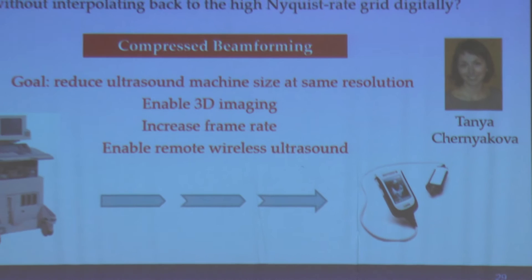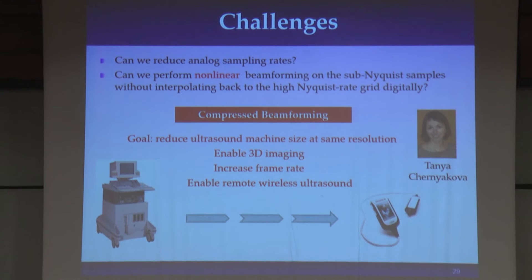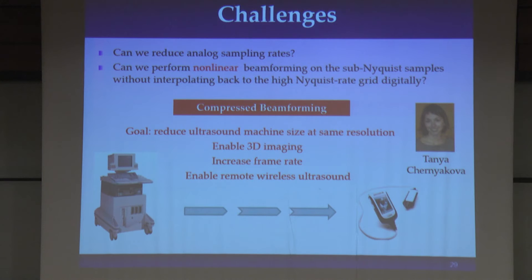Not only could we sample at a low rate, but could we sample at a low rate so that we could do different types of nonlinear processing on these low-rate samples? That's of course much more difficult. What we're going to show later today — and Tanya's going to talk a lot about this — is that we could do this by a process we call compressed beamforming. Not only could we reduce sampling, we could actually perform beamforming on these compressed samples. This paves the way towards high-resolution 3D imaging, allows us to increase the frame rate, and enables a very cool demo of wireless ultrasound — enabled by the fact that we could reduce the sampling rate.